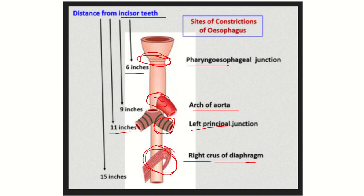The fourth constriction is at the esophageal opening of the diaphragm, the diaphragmatic hiatus, which is 40 cm from the incisor teeth. So to summarize: first constriction at the pharyngoesophageal junction, second at the arch of the aorta, third at the left principal bronchus, and fourth at the diaphragmatic hiatus.